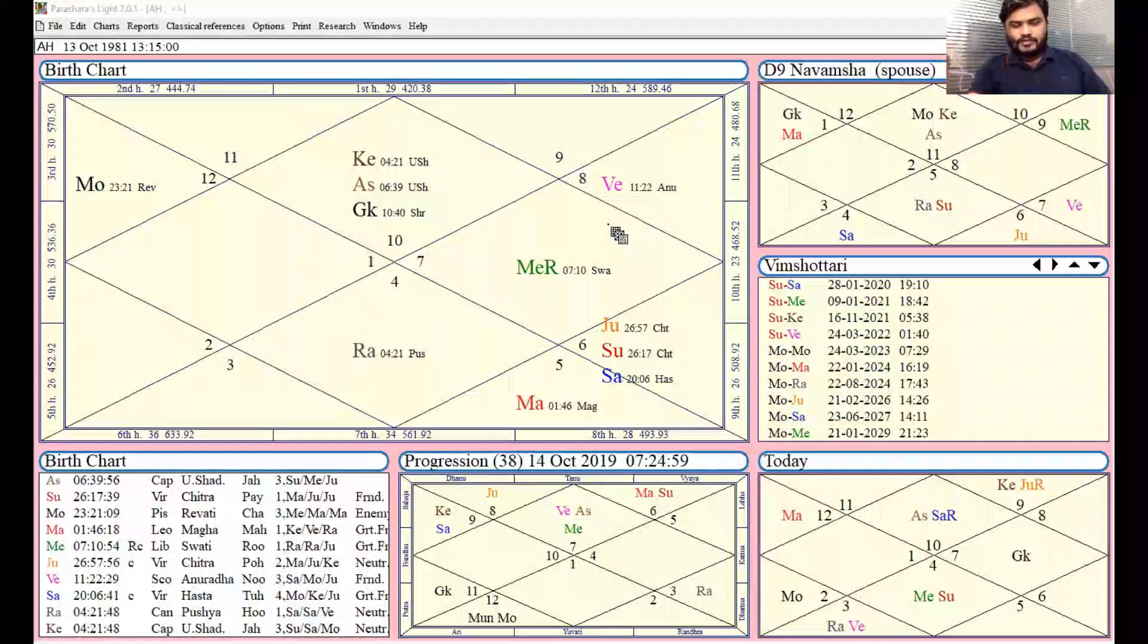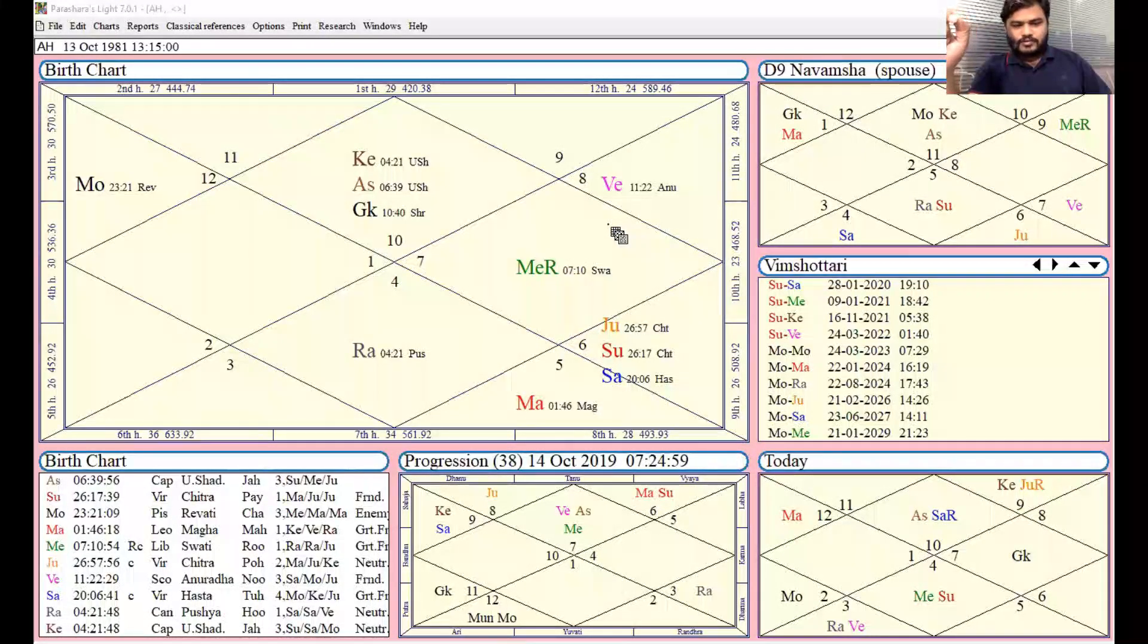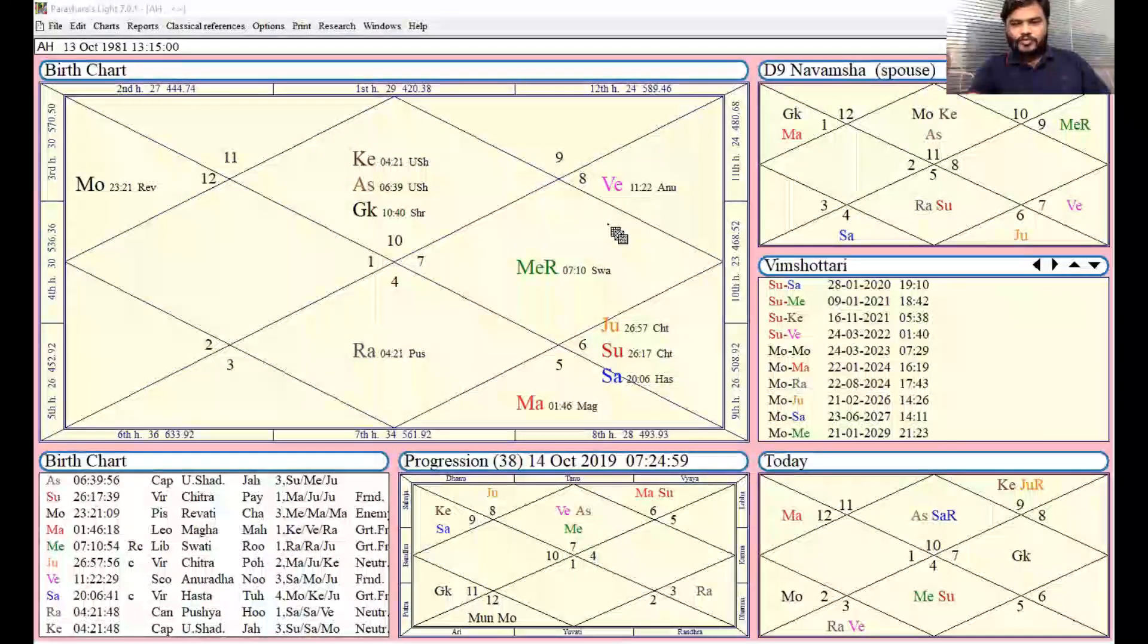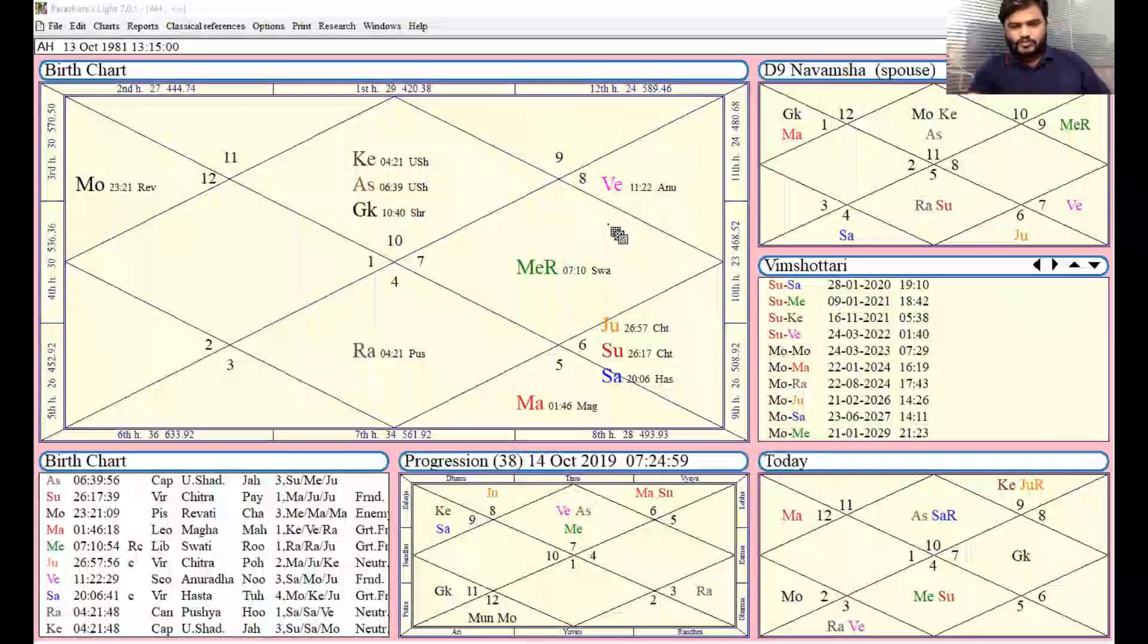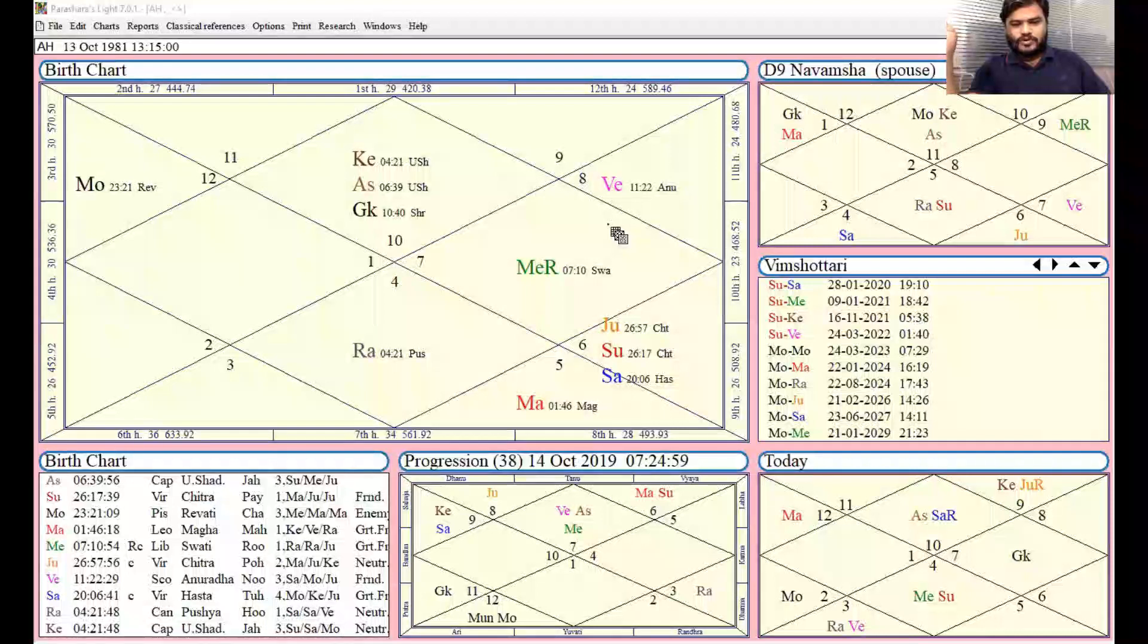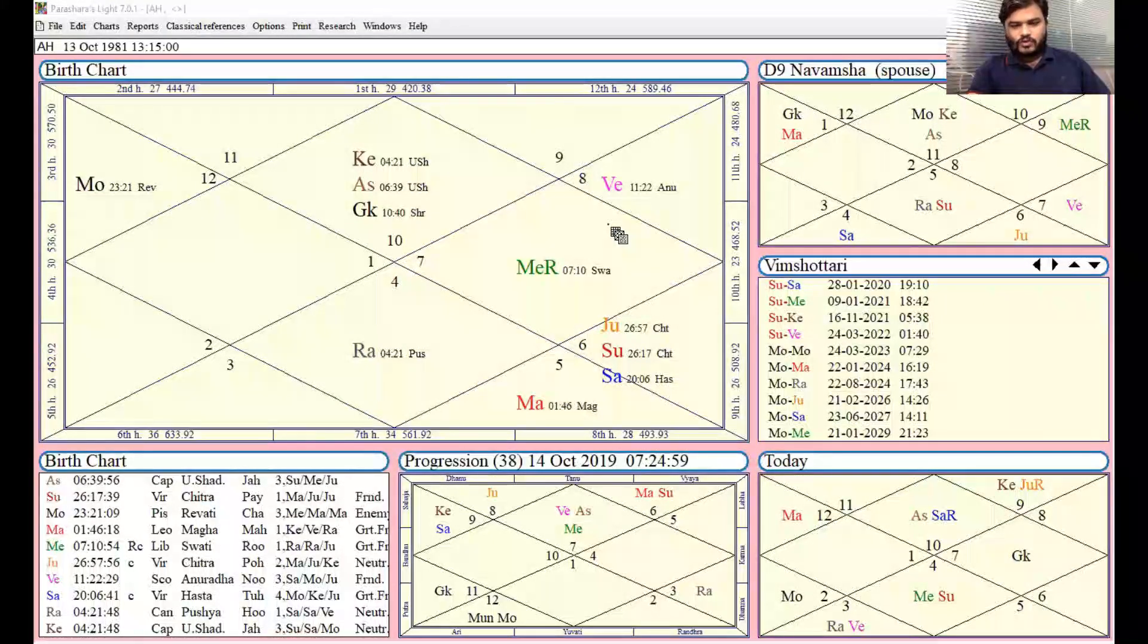First marriage at 28th year, second marriage at 31st year, and third marriage at 34th year. In the first marriage, this native manipulated falsely, due to which a lot of misunderstanding and court cases happened, and finally they got separated.